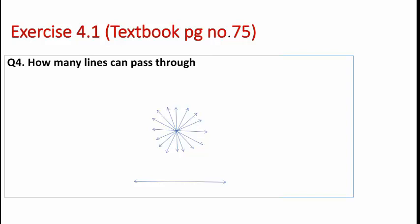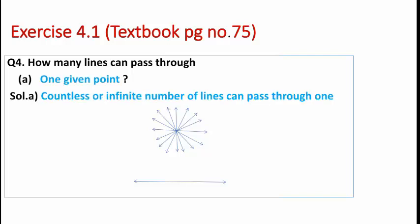Next, moving to the question: how many lines can pass through one given point? The answer is countless, or an infinite number of lines can pass through one given point. This is shown in the figure where we have taken a point P, and you can see that countless lines are passing through it.